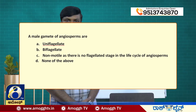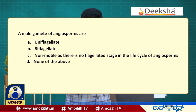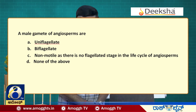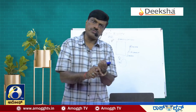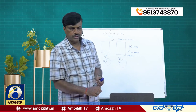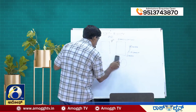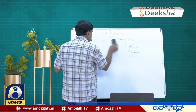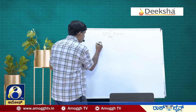The next question: male gametes of angiosperms are — (A) uniflagellate, (B) biflagellate, (C) non-motile, as there is no flagellated stage in the life cycle of angiosperms, or (D) none of the above. Remember: in angiosperms, pollen grains are formed in the anthers.